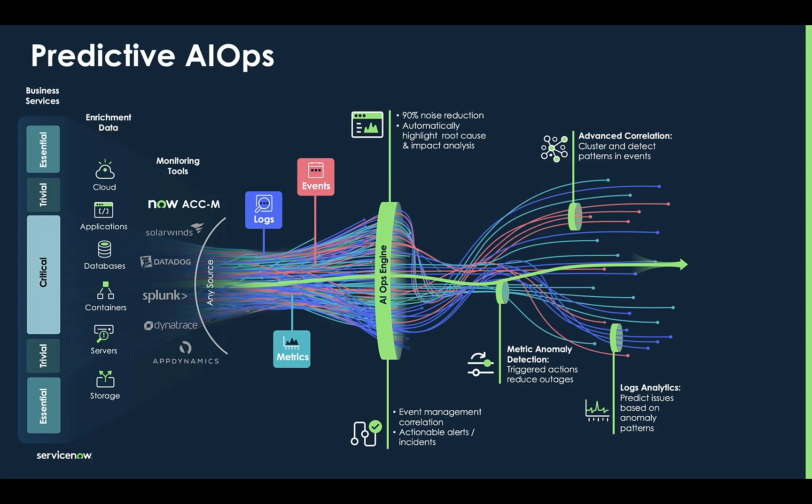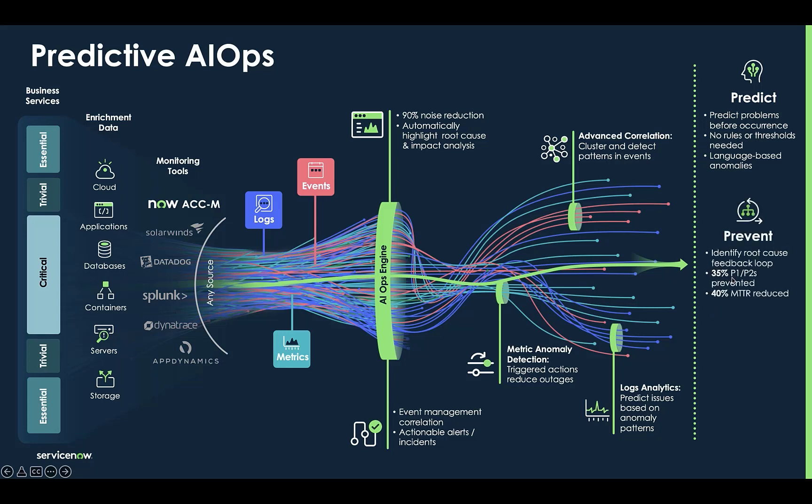And there is real financial time-saving value here. The predictive AIOps solution gets you out of a reactive state by predicting problems before occurrence and quickly preventing outages by identifying root cause and achieving significantly lower P1, P2 incidents. And ultimately, that leads to a 40% reduction in mean time to resolution.